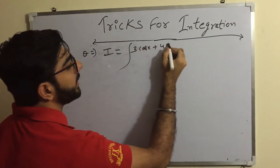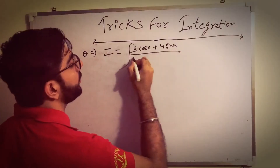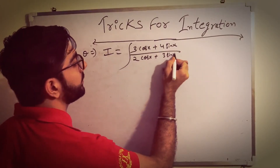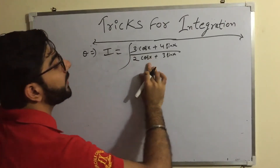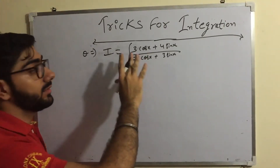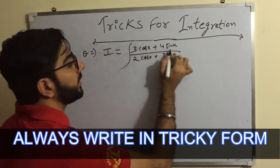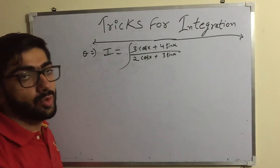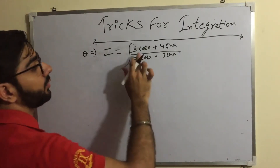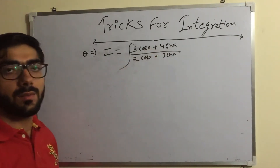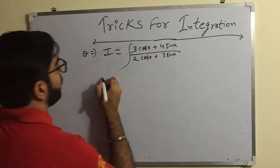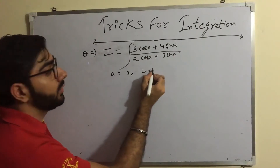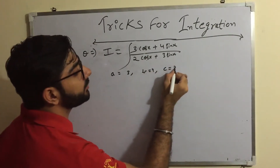Let's start: I = integration of (3cosx + 4sinx) / (2cosx + 3sinx). You should always write it in this form — cosx terms and sinx terms. Our question is already in this form, so we don't need to manipulate it.